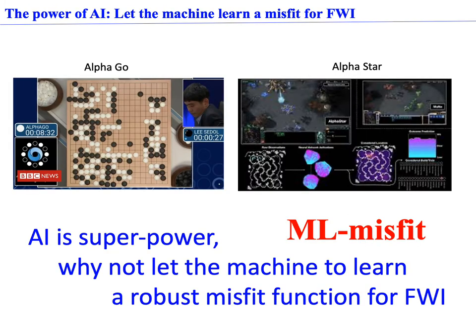Now AI has become rather powerful, and in many areas it shows great success, demonstrating that computational power can be transferred into intelligence with advanced algorithms. However, human-designed misfit functions can be good in one aspect while not ideal in others. Besides, applying and improving those manually-designed misfit functions requires considerable mathematical and physical knowledge as well as experience. Thus, considering how powerful AI is, we would like to ask: why not let a machine learn a robust misfit function for FWI?